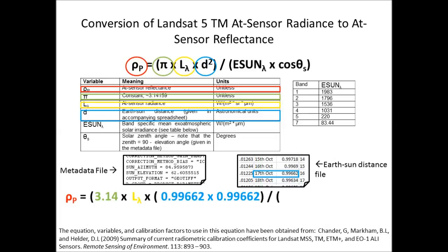The next value is the earth-sun distance given from the attached spreadsheet, specific to each individual day of the year. This is a squared value. For example, on the 17th of October we have a value of 0.99662, and since it's squared, we multiply it by itself.